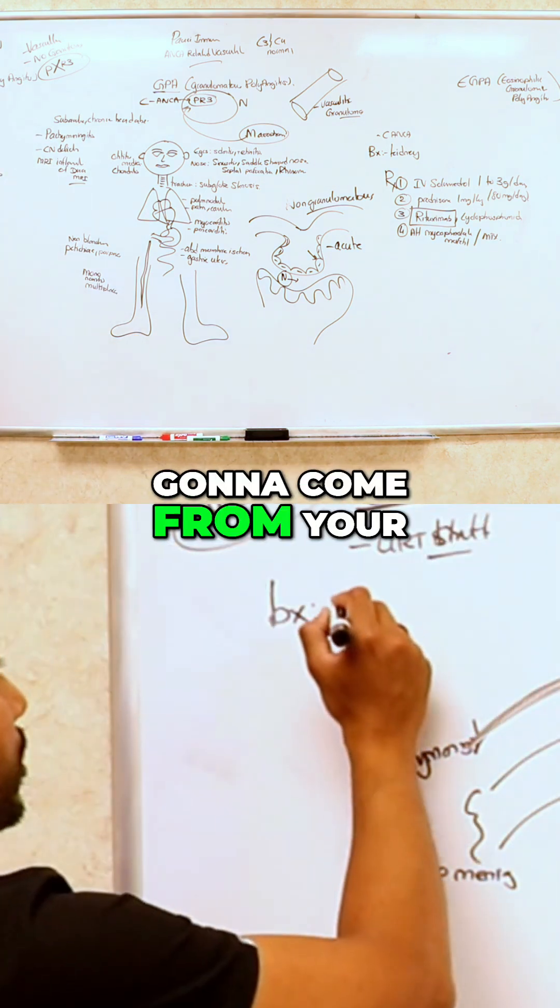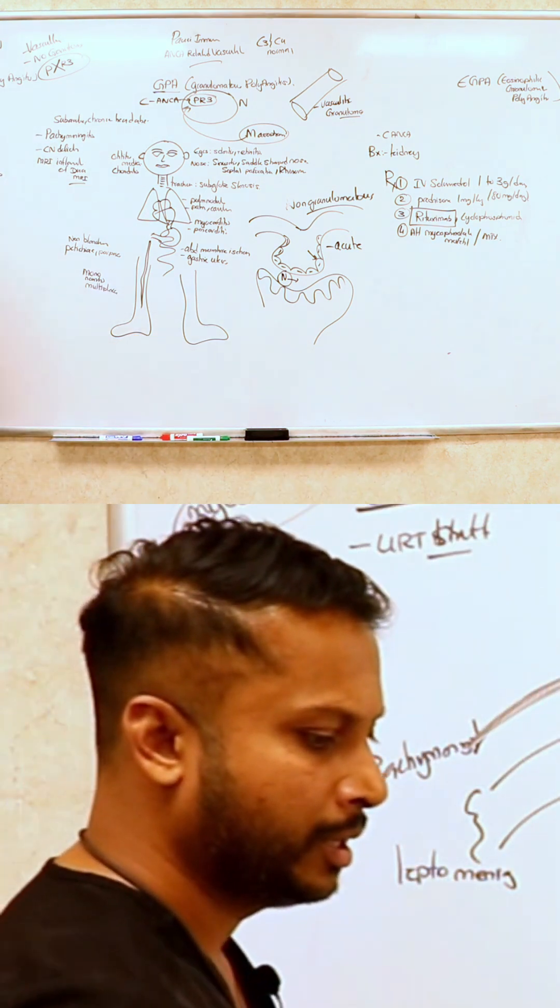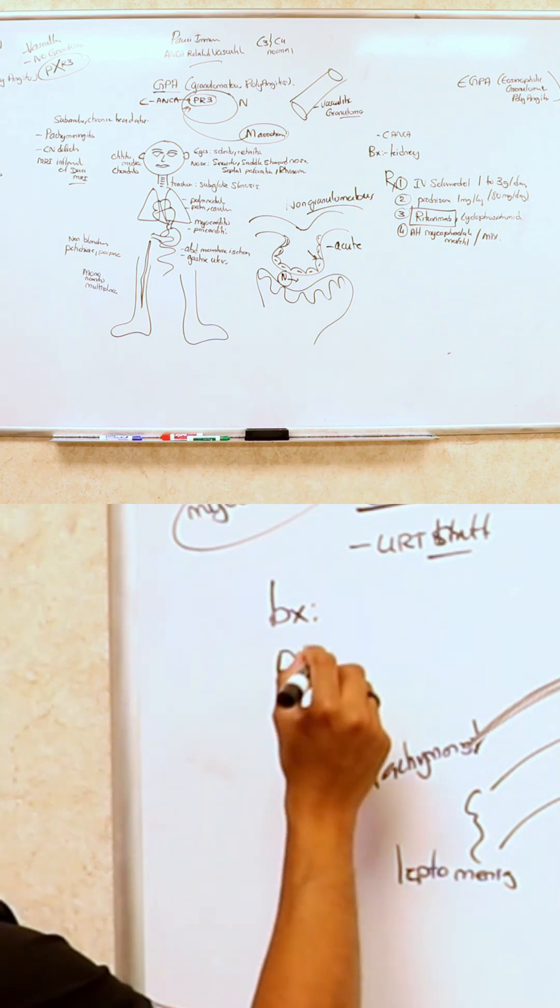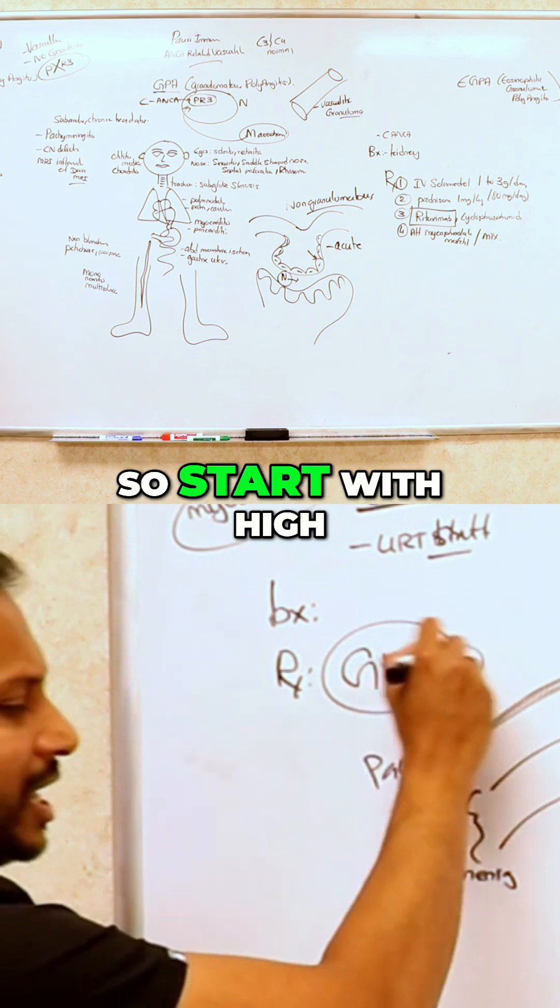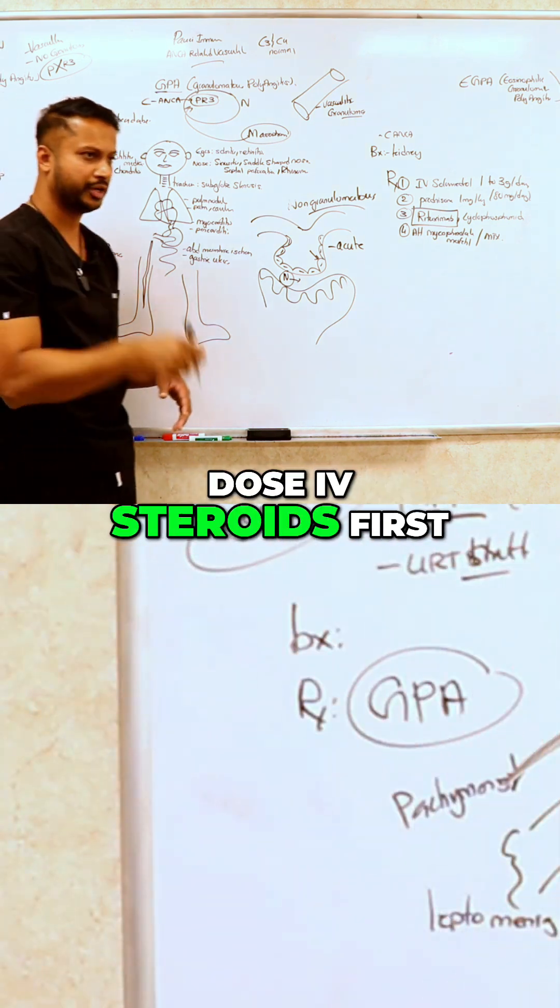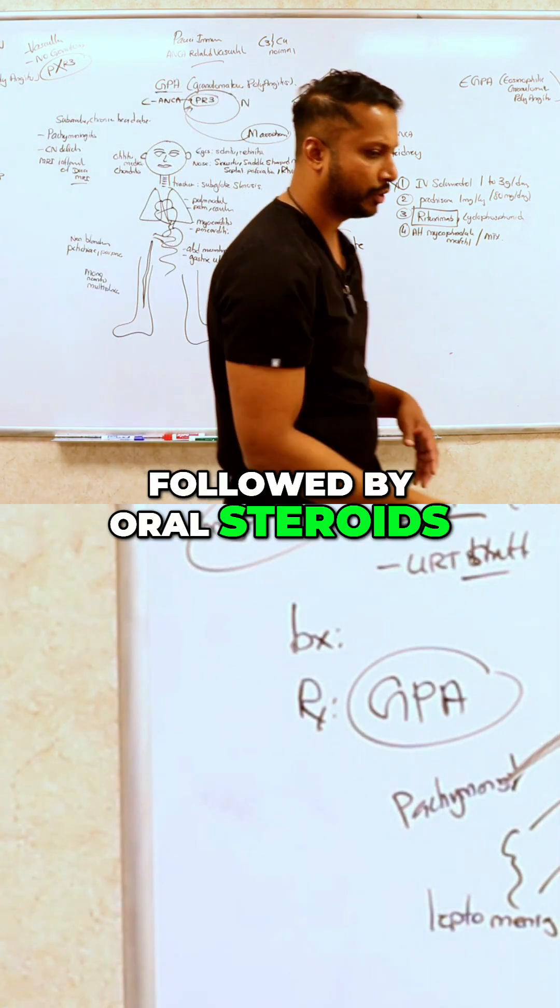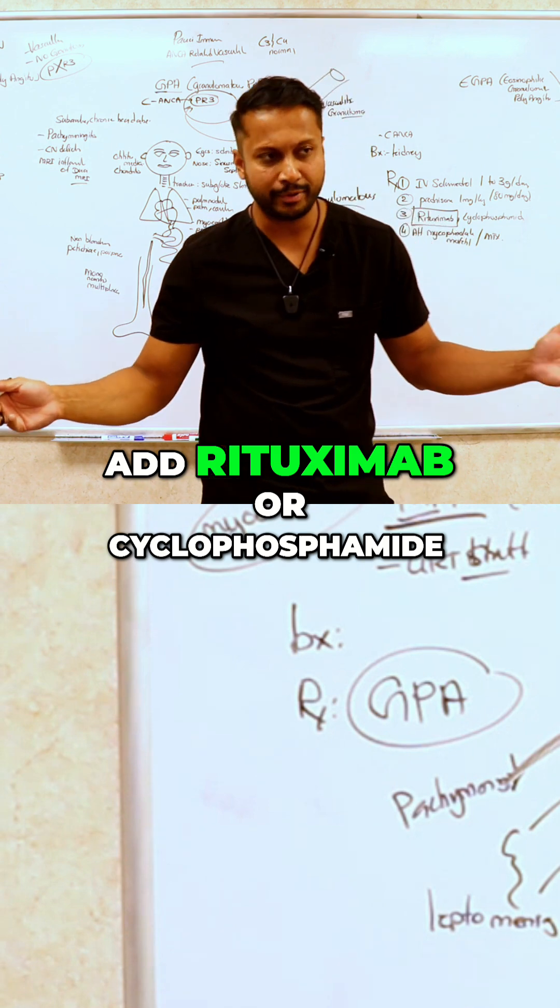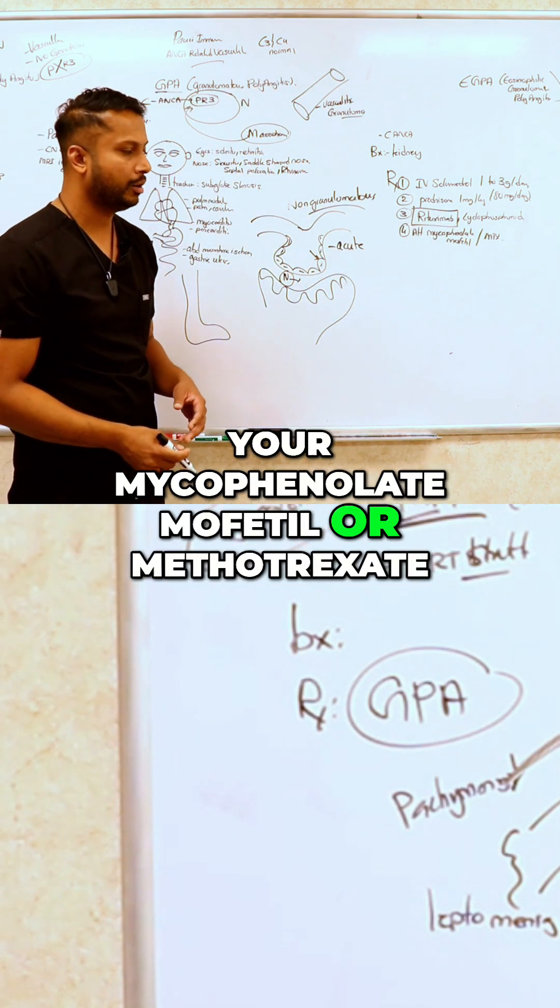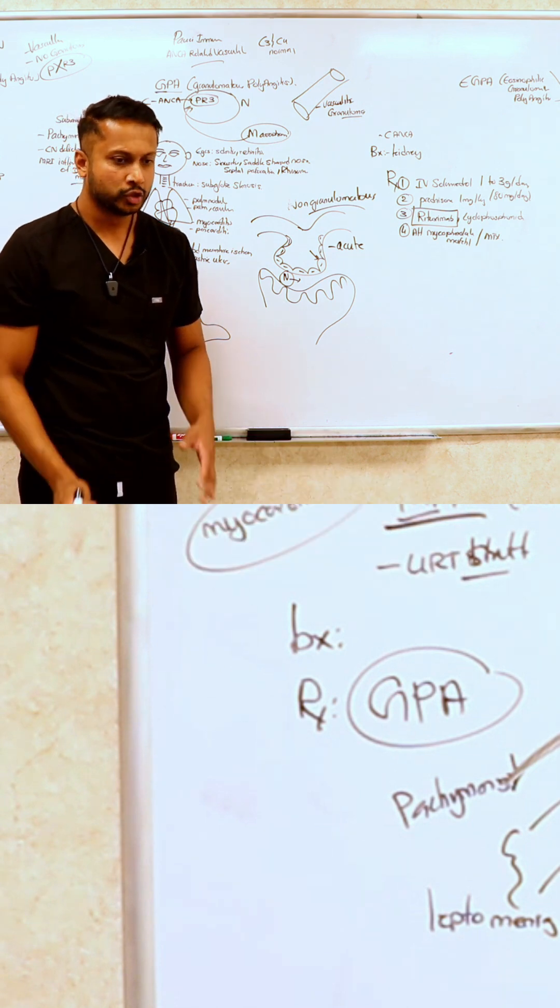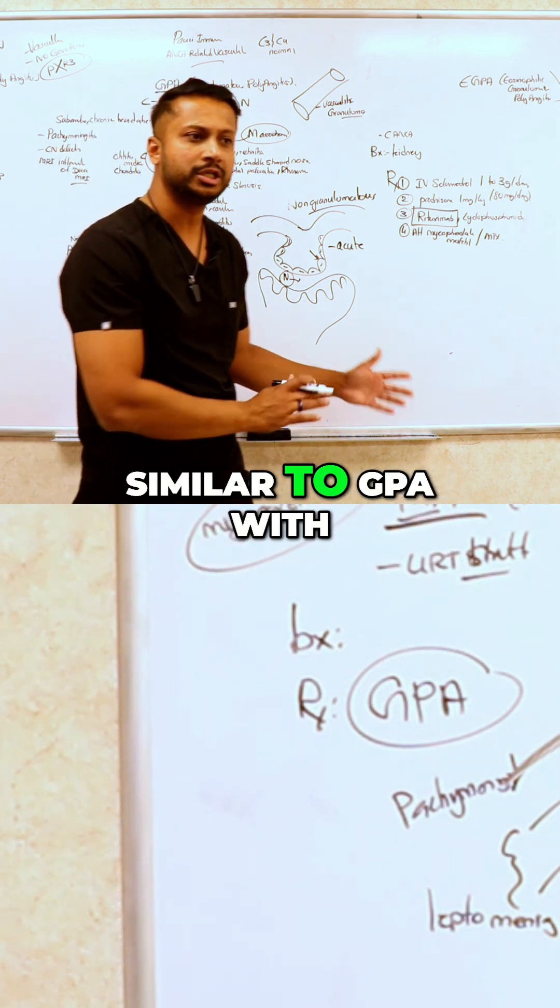And how are you going to treat them? Exactly the same as GPA. So start with high-dose IV steroids first, followed by oral steroids, and then you can add rituximab or cyclophosphamide. Alternatives is going to be your mycophenolate mofetil or methotrexate. So MPA is very similar to GPA with a few exceptions.